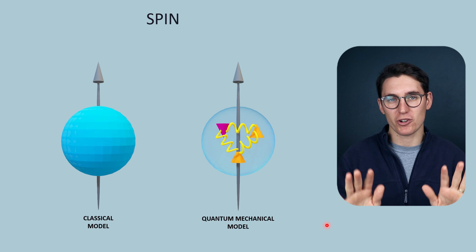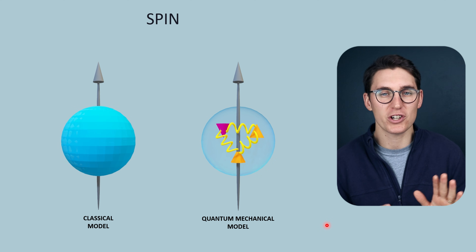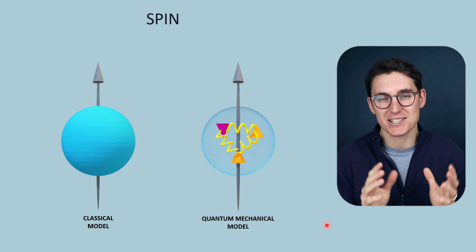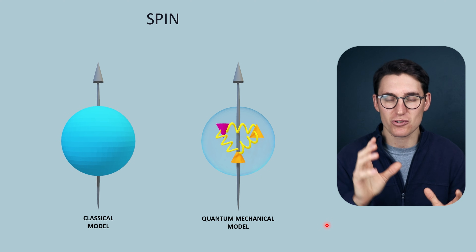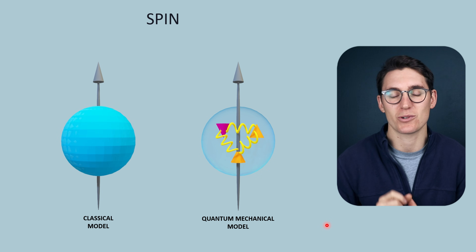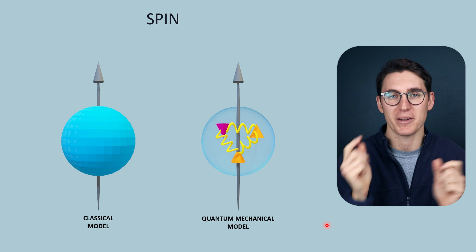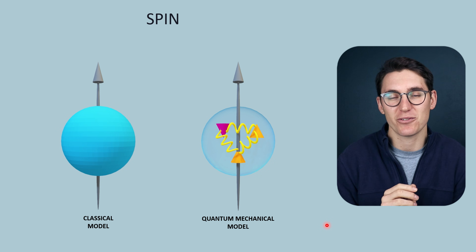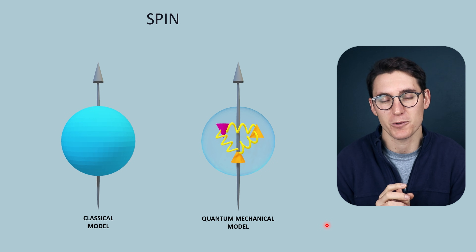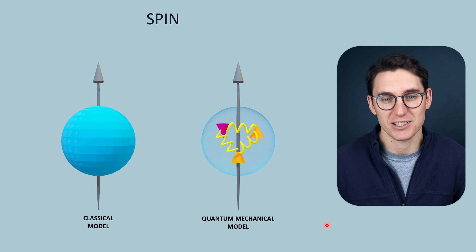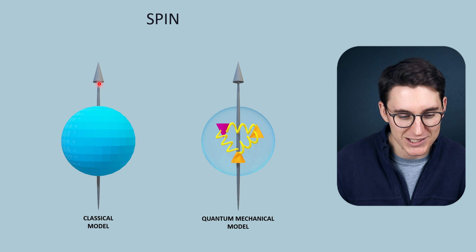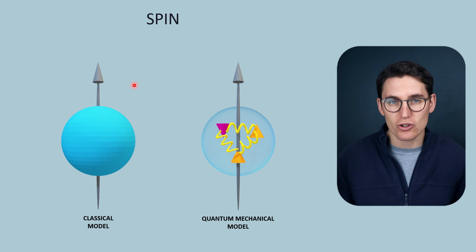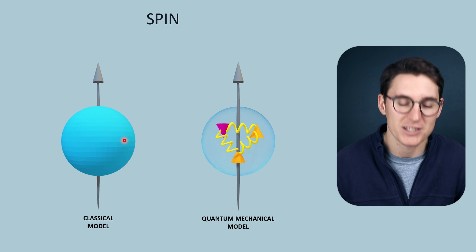Throughout your studying you're going to come across two separate models. The first is what's known as the classical model and the second is the quantum mechanical model. The classical model is more intuitive and it describes a charged particle rotating around its own axis with angular momentum. That movement of charge with angular momentum induces a magnetic field around that charged particle, and the strength and direction of that magnetic field can be represented by what's known as the magnetic moment, which we represent with this arrow here. The longer the arrow, the stronger the magnetic field around this spinning particle.